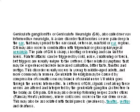Geniculate neuralgia may be caused by compression of the somatic sensory branch of cranial nerve 7, which goes through the nervous intermedius. In sufferers of geniculate neuralgia, signals sent along these nerves are altered and interpreted by the geniculate ganglion as geniculate neuralgic pain. Geniculate neuralgia may also develop following herpes zoster oticus, where cold sores occur on the ear drum or in the ear canal, and may also be associated with facial paresis, tinnitus, vertigo, and deafness.